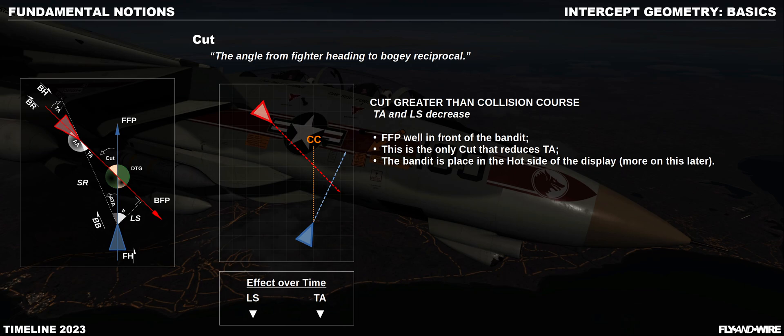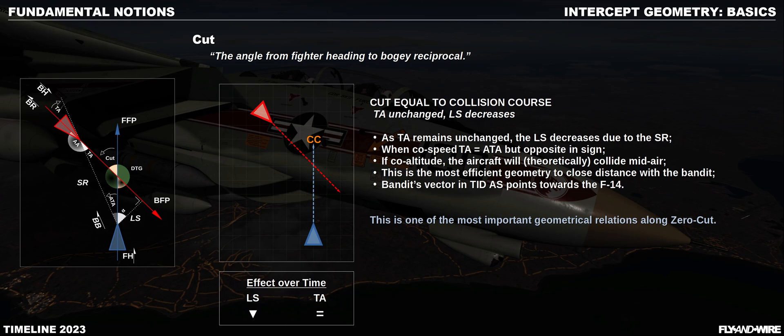When we find the nose pointing before collision course, we have cut greater than collision course. In this situation, over time, both the TA and lateral separation decrease — we are throwing our aircraft in front of the nose of the bandit. When cut matches collision course, magic happens: if co-altitude, eventually the two aircraft will collide. Collision course is also the most efficient way to close the distance with the bandit. Lateral separation decreases, but the TA does not change — we can say that CC captures TA. Moreover, if co-speed, TA becomes equal to ATA by opposite sign, as the intercept triangle becomes isosceles.